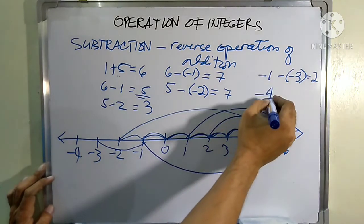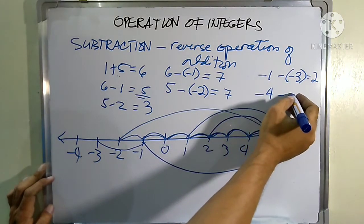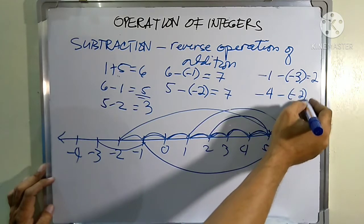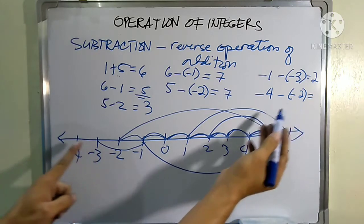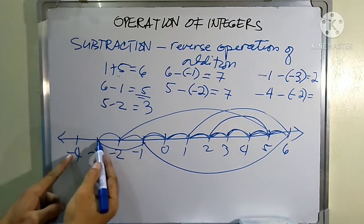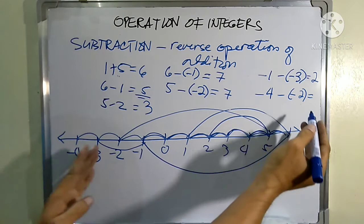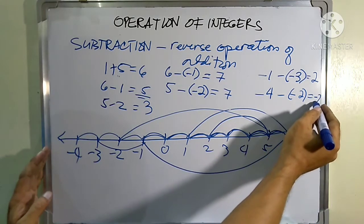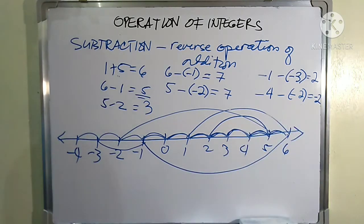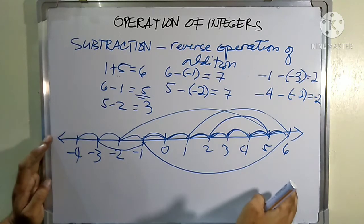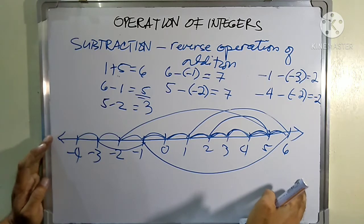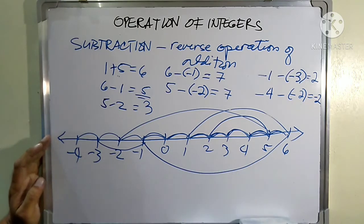Another example: negative four minus negative two. What number must be added to negative two in order to get negative four? One, two — and that is going to the left, so it is negative two. This method of subtracting using the number line is very easy for single-digit numbers. We can also have subtraction of two-digit numbers, but it will require a very long number line.